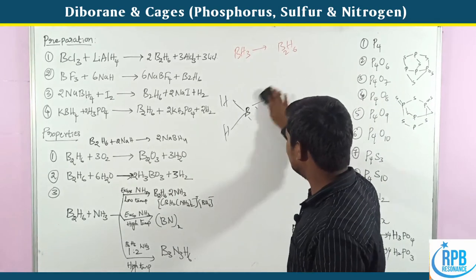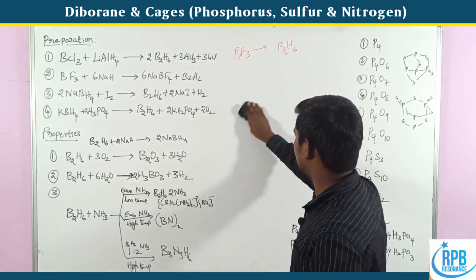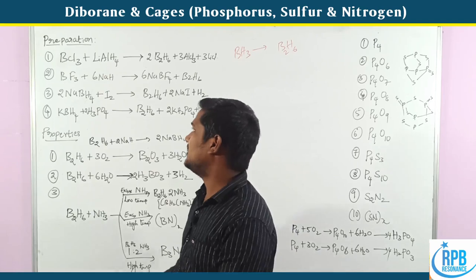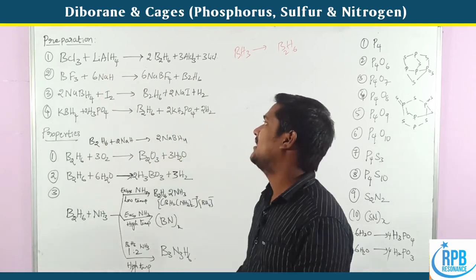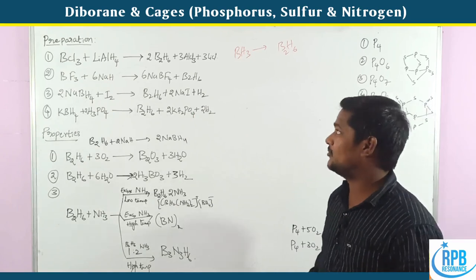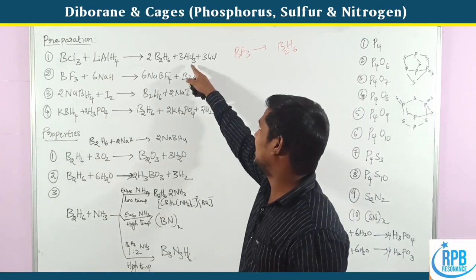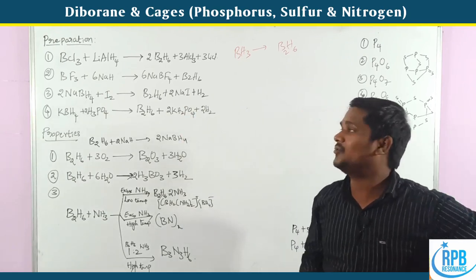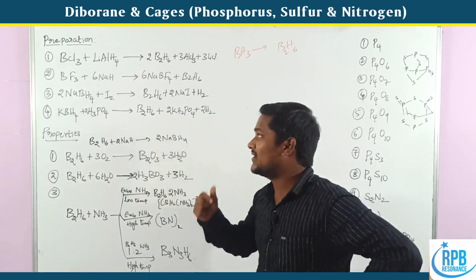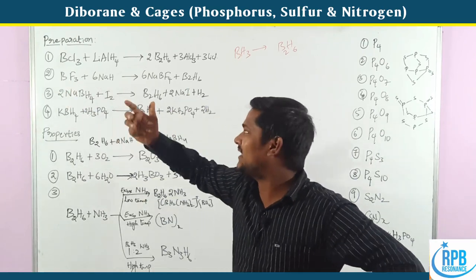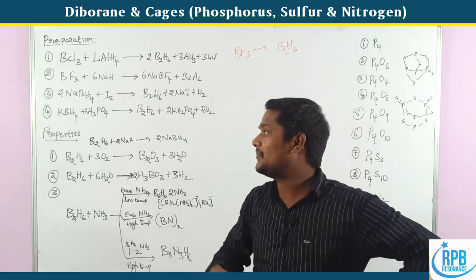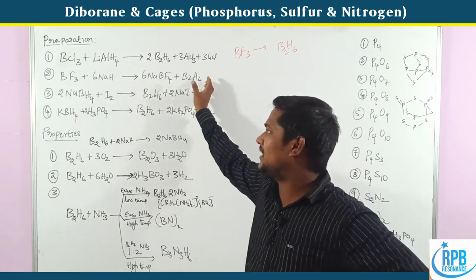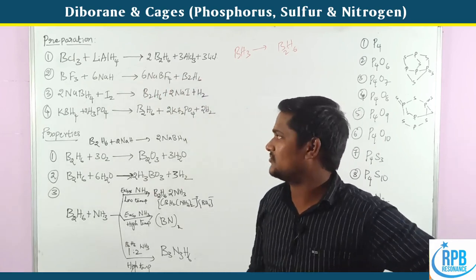Now some preparation methods of diborane. First: BCl3 reacted with lithium aluminium hydride gives diborane. Second: BF3 (boron trifluoride) reacted with sodium hydride gives sodium boron fluoride as well as diborane.